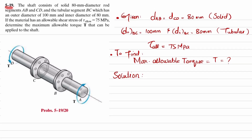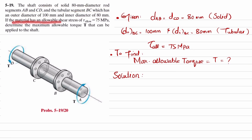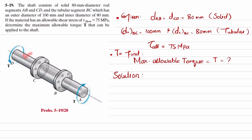Welcome back. Problem 5-19: the shaft consists of a solid 80 millimeter diameter rod for segments AB and CD, and a tubular segment BC with an outer diameter of 100 millimeters and inner diameter of 80 millimeters. The material has an allowable shearing stress of 75 megapascals. All given data has been noted.